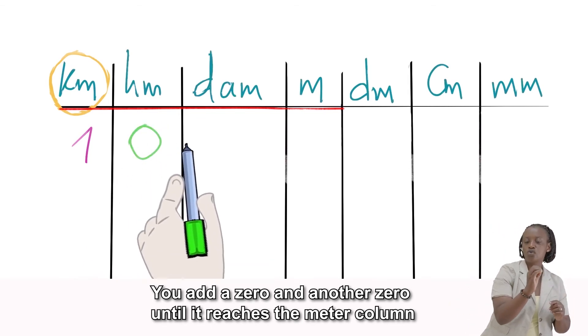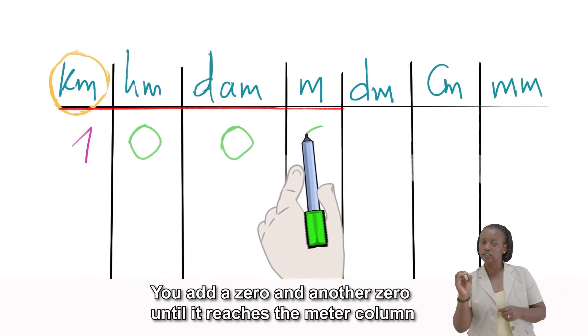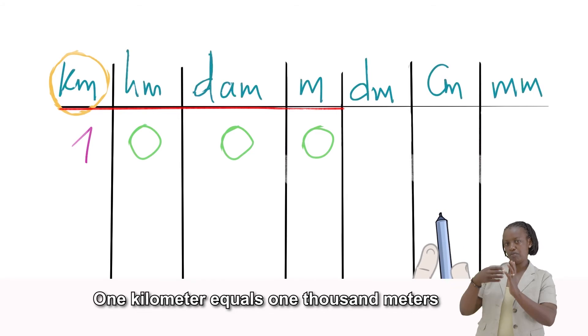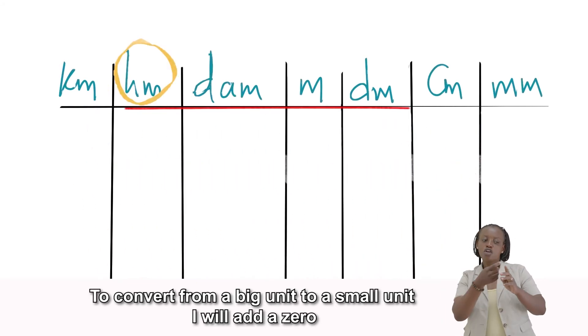and another zero until it reaches the meter column. One kilometer equals 1,000 meters. To convert from a big unit